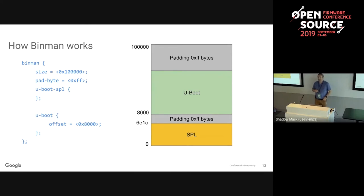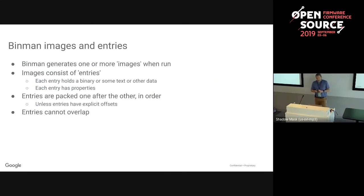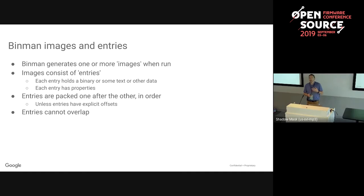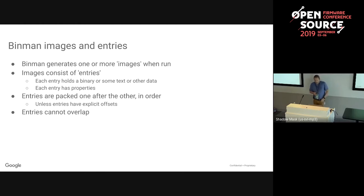Binman generates one or more images when run. It supports multiple images because you might want a debug build and a release build, or a development build where nothing's signed and everything's unlocked. Each image contains a number of entries - an entry is a way of saying what's in here: a binary, some data, some padding, or whatever. Entries are packed one after the other in order and they're not allowed to overlap.